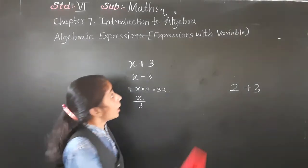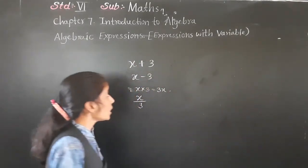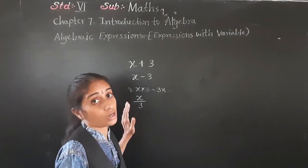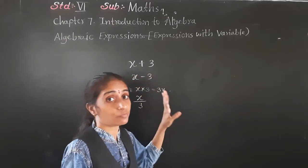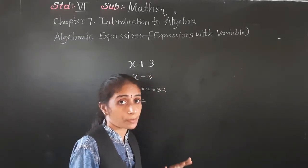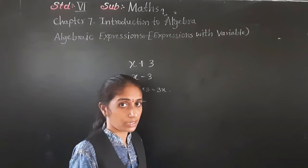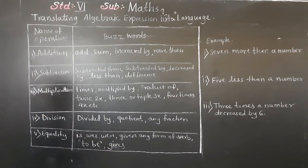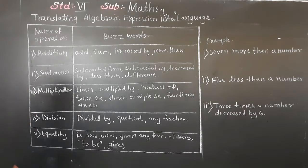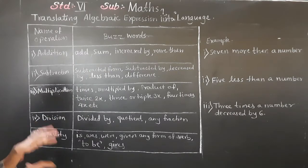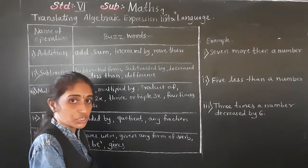Now you understand what is an algebraic expression. An algebraic expression is a combination of variable and constant with basic mathematics operations such as addition, subtraction, multiplication, and division. Let's now learn translating algebraic expressions into language.